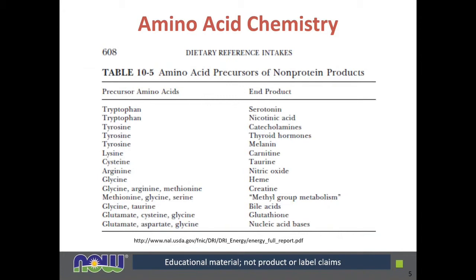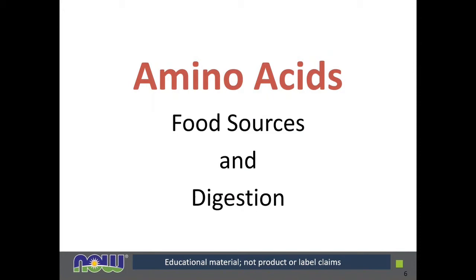When we think of amino acids, we automatically think in terms of protein and muscle building, but amino acids play a lot of different roles in the body. These include as precursors to neurotransmitters like tryptophan to serotonin and tryptophan to nicotinic acid, otherwise known as vitamin B3. Tyrosine is involved in catecholamine neurotransmitters, thyroid hormones, and melanin, which is a skin pigment. Lysine is a precursor to carnitine, cysteine to taurine, arginine for nitric oxide, and lysine as part of heme and hemoglobin, among many other roles.